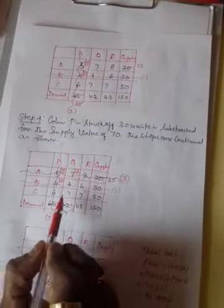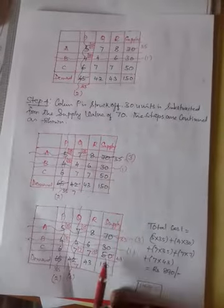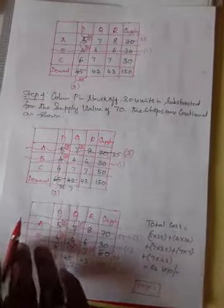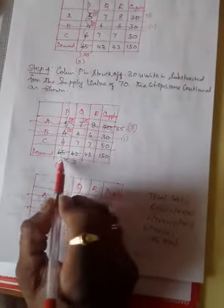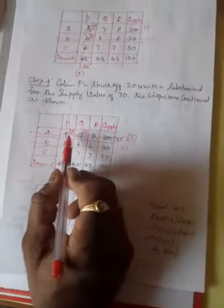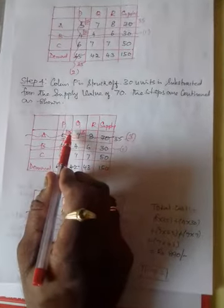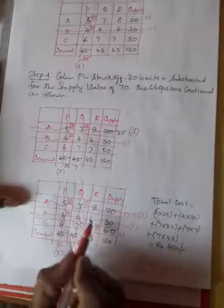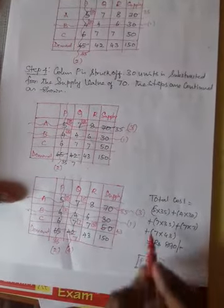Again, continue the same procedure for the non-struck off elements from the third and fourth tables. The same procedure has to be allocated here. Out of supply and demand, whichever is the minimum, that element shall be written in the cell. This is the northwest corner approach. From this fourth table also, just observe.